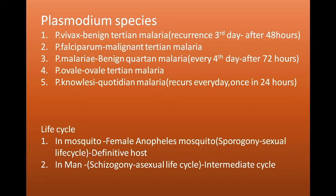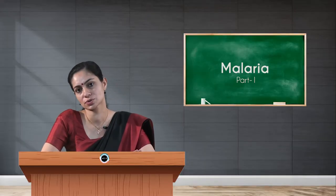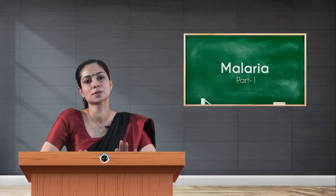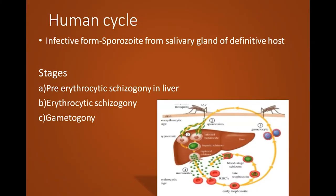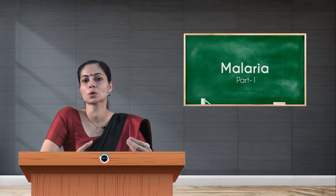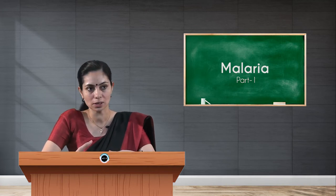Coming to the life cycle of the parasite, it happens in two hosts. We'll start with the human cycle. The sporozoite stage of plasmodium enters into the human being, so we can call the sporozoite stage the infective form of the parasite. This infective form comes from the salivary gland of the female Anopheles mosquito. When the mosquito bites, the sporozoite stage enters the human body.